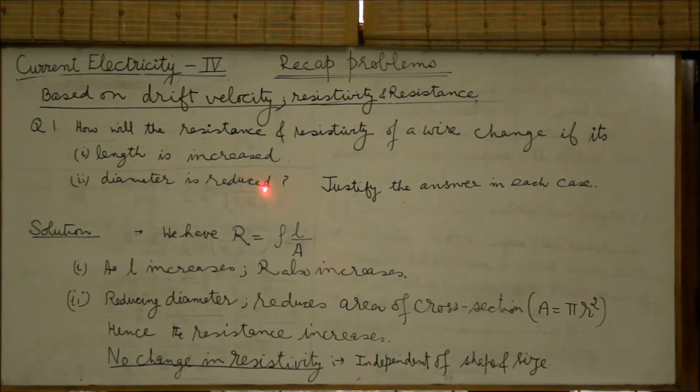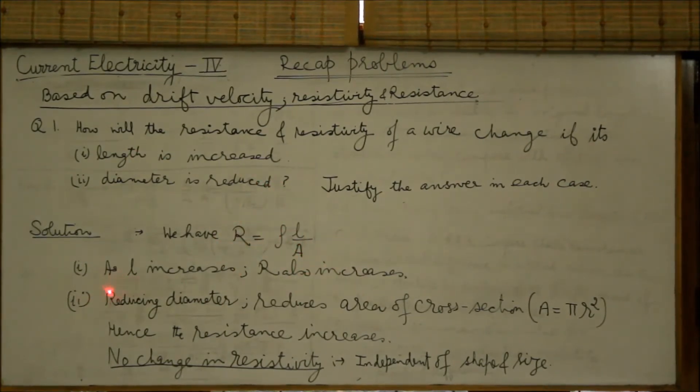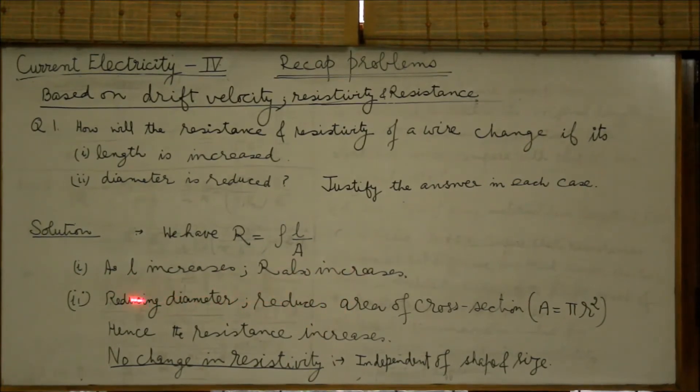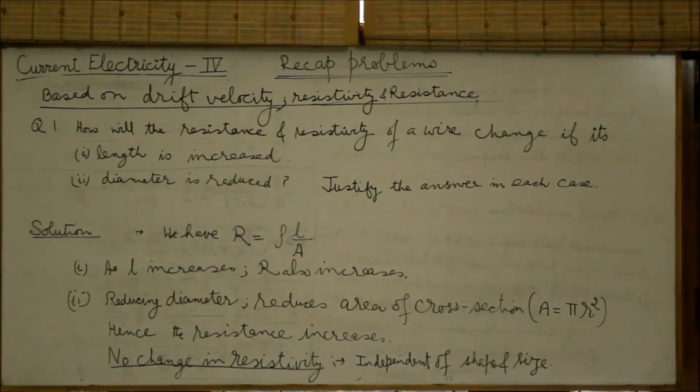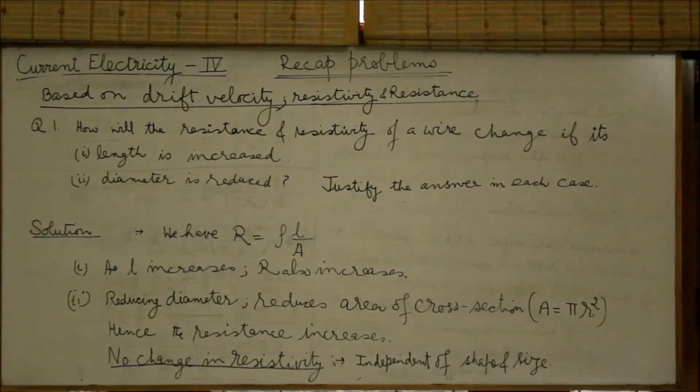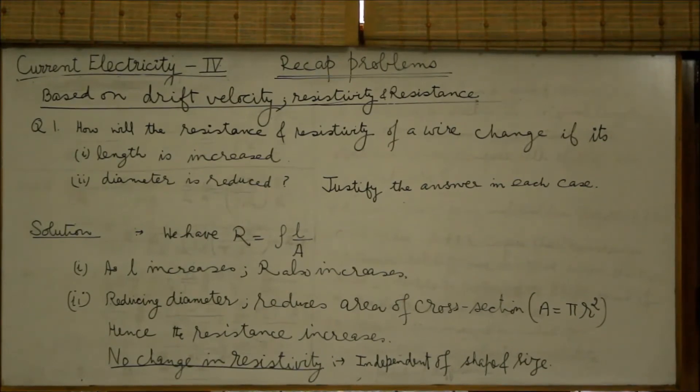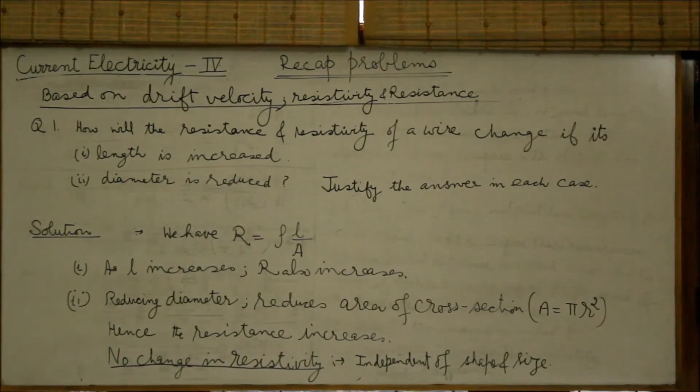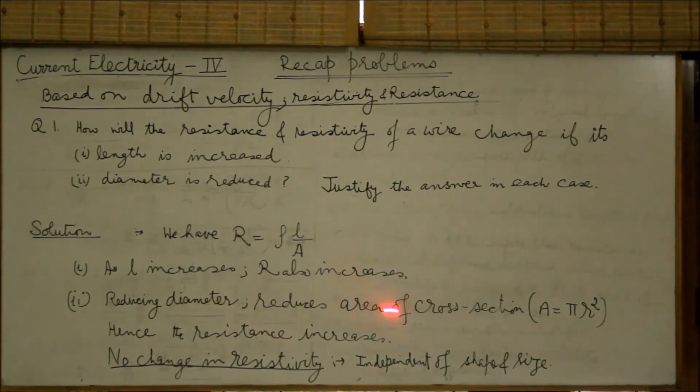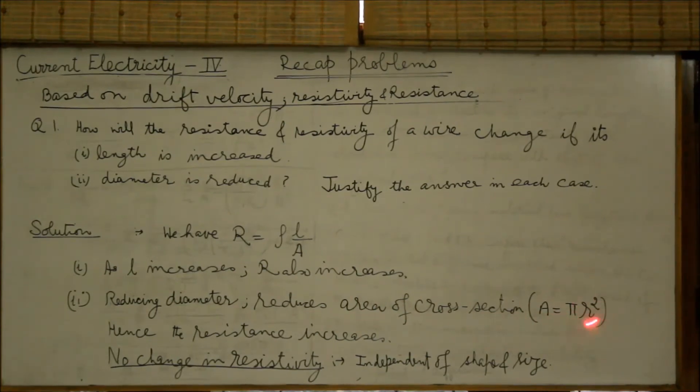As length is increased, resistance will increase. So that is the answer to the first part of the problem. As L increases, R also increases. Second part is reducing the diameter. The reduction in diameter results in reduction in radius. So reducing diameter reduces area of cross-section because area of cross-section is given by pi r square. A reduction in area will mean an increase in the resistance. Hence the resistance increases.